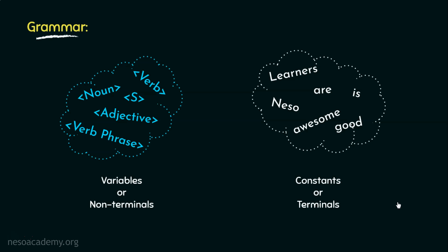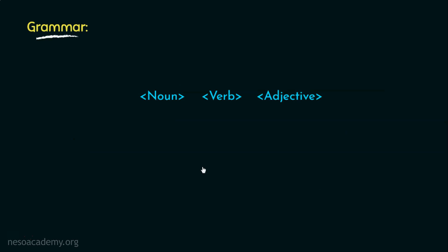Now, why is so? Let me explain. Consider this particular structure: Noun, followed by verb, followed by adjective. Now, for noun, we have two options, Learners and Neso. Now, once we select learners from the available choices for the place of noun, it is fixed. We can't choose anything else now.